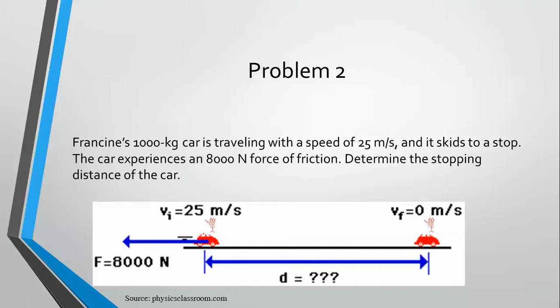So let's do an example. Francine's 1,000-kilogram car is traveling with a speed of 25 meters per second, and it skids to a stop. The car experiences an 8,000 newton force of friction. Determine the stopping distance of the car. So we're going to look at the change in energy from when she starts to when she stops, and the work that's done and how we can calculate the distance.